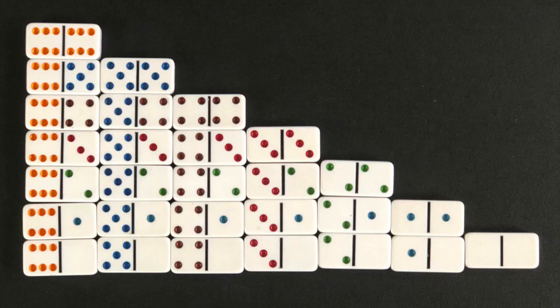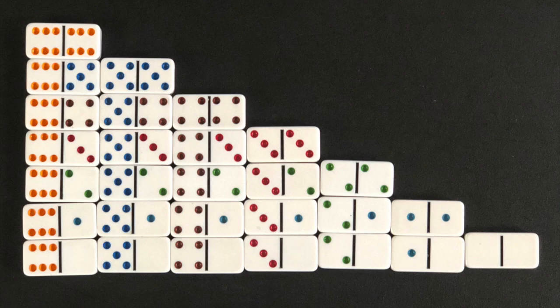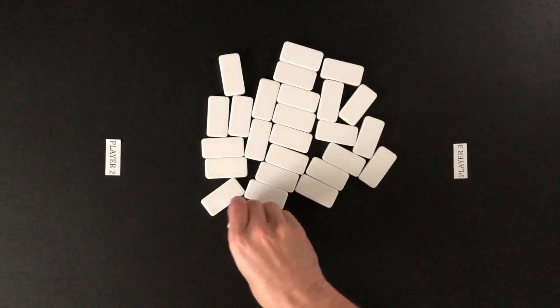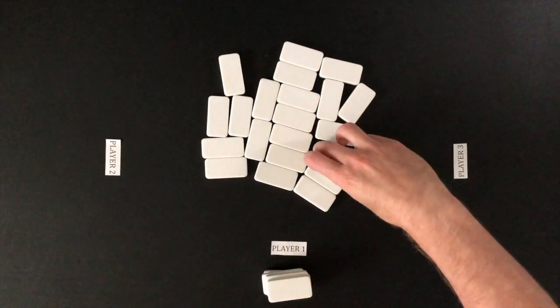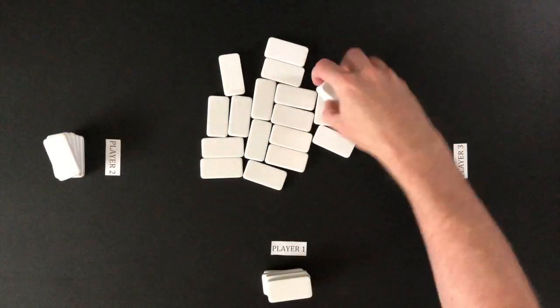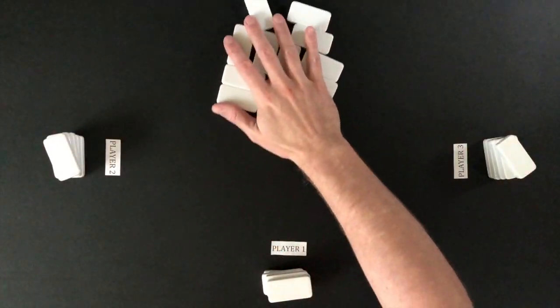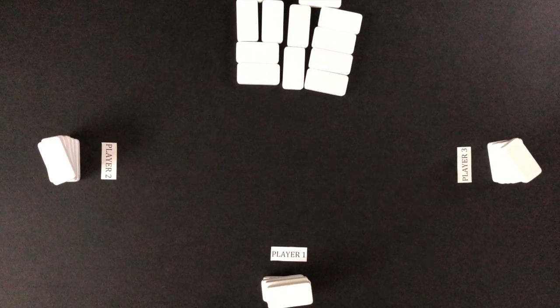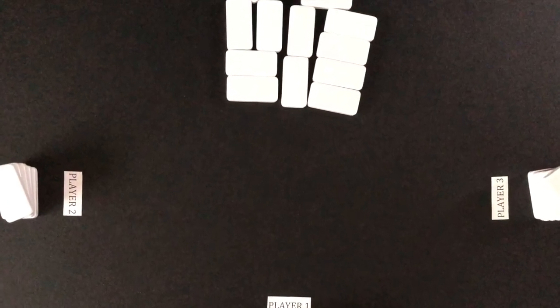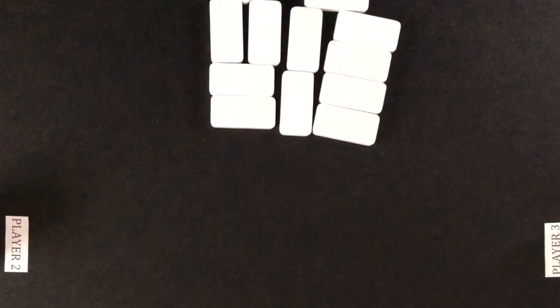To play you will need a set of double six dominoes. All the dominoes are faced down and mixed. Each player will draw seven dominoes in a two player game. Each player will draw five dominoes in a three or four player game. The remaining dominoes stay face down and are known as the boneyard.